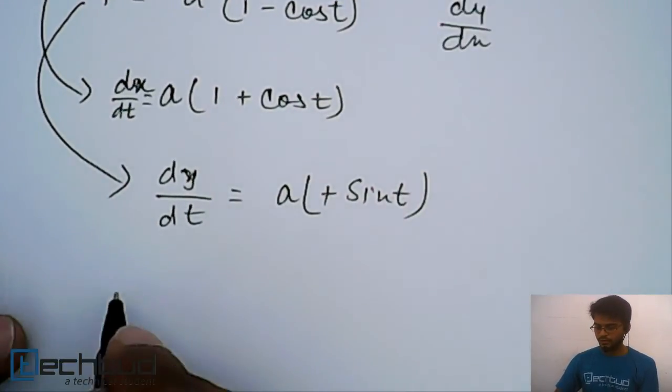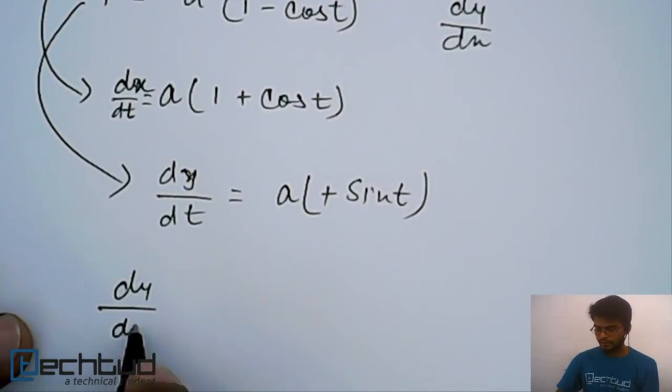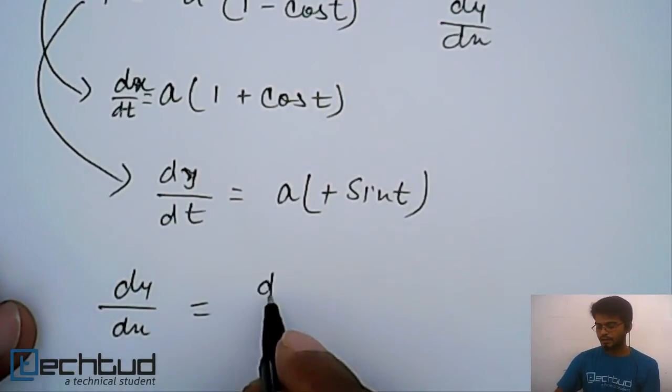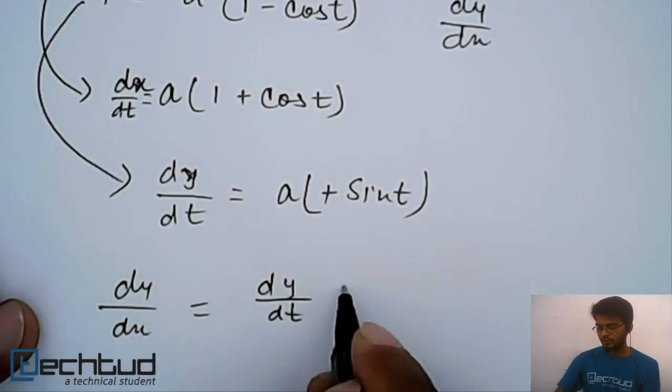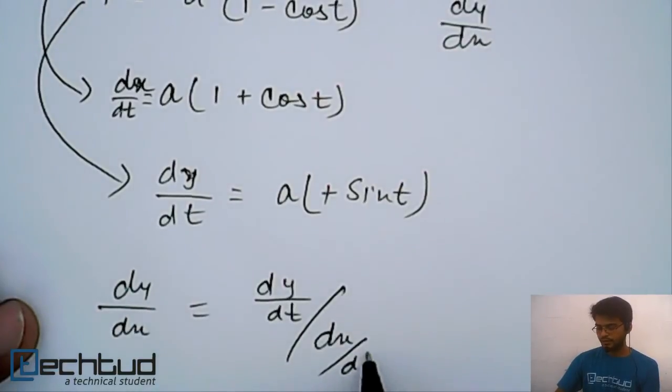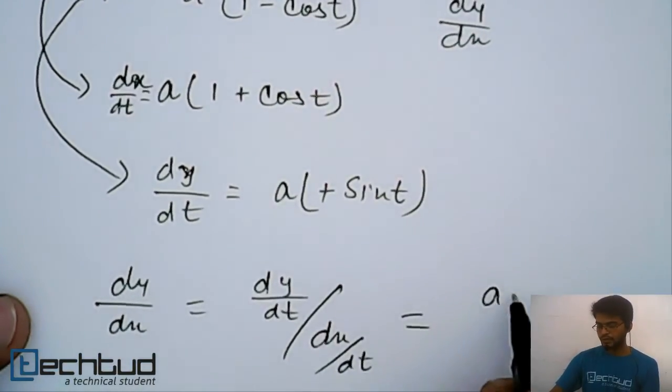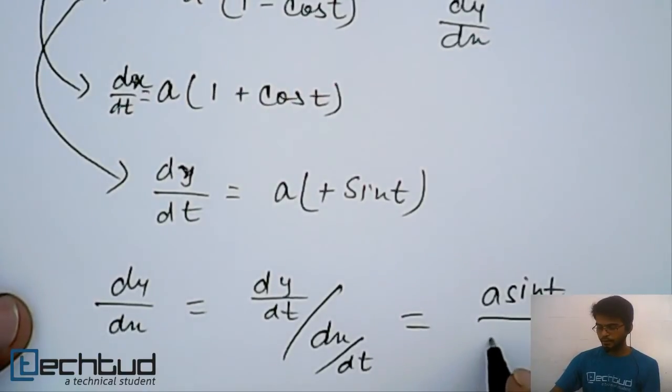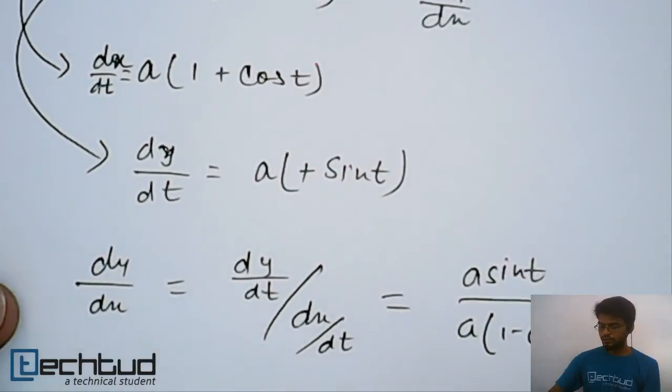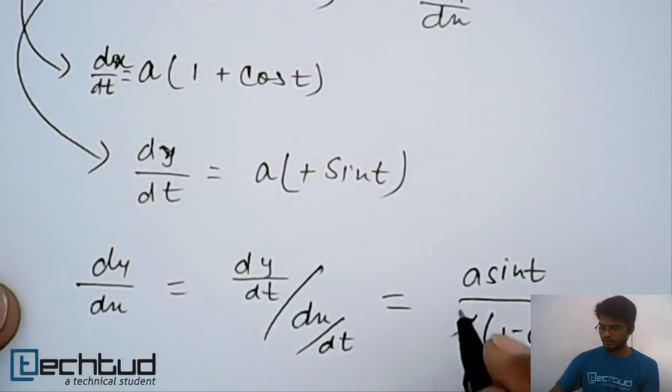Now what is dy/dx? dy/dx is dy/dt upon dx/dt, so which will be equal to a sin t upon a of 1 minus cos t.